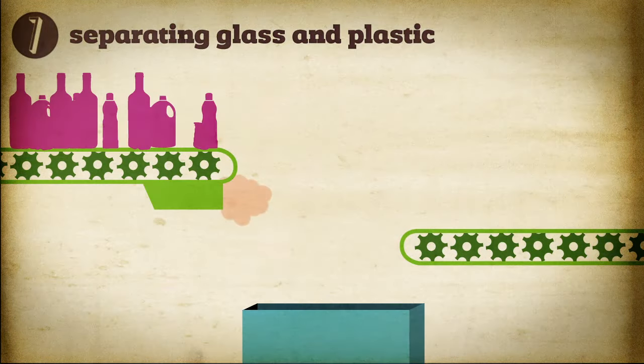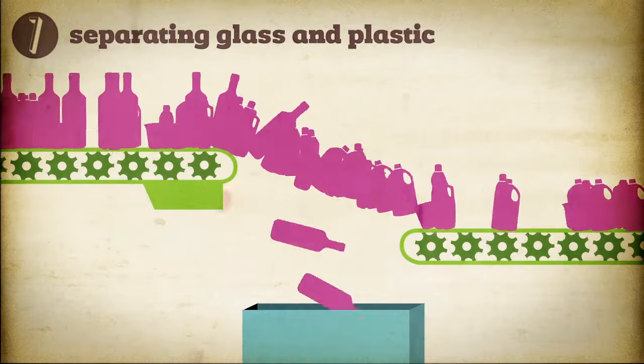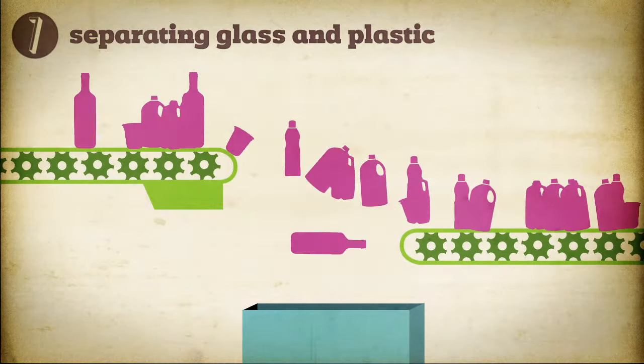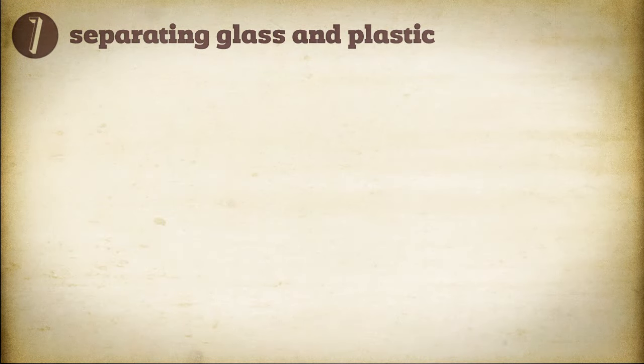Next, the heavier glass falls into a pit, while the lighter plastic materials float onto the next conveyor belt for further sorting. The now-broken glass, called cullet, is then shipped to a glass recycling facility.